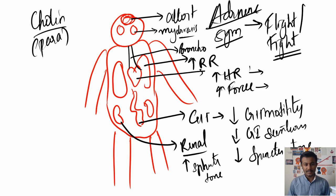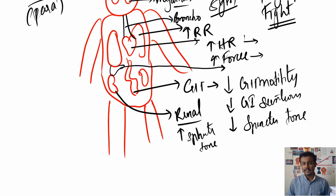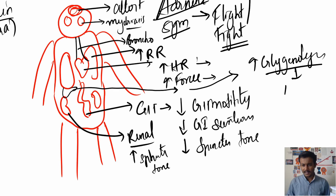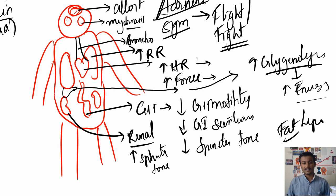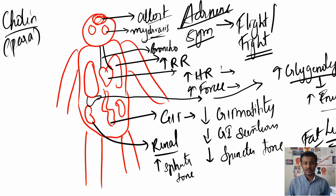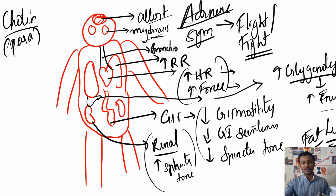One more thing is the liver. While you're in fight mode you need more energy, so the liver increases glycogen breakdown — glycogen is broken down to increase the amount of energy produced. The same thing goes for fat: adipose tissue undergoes lipolysis. So the adrenergic system gives you mental alertness, mydriasis, bronchodilation, increased respiratory rate, increased heart activity, decreased GI and renal activity, and increased energy production by the liver and adipose tissue.